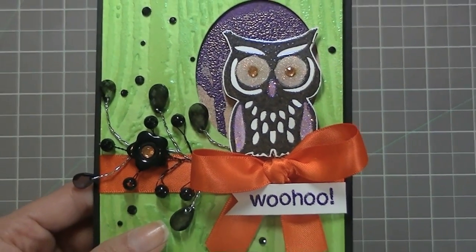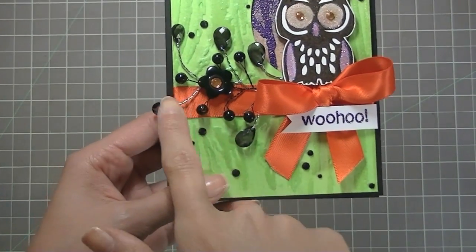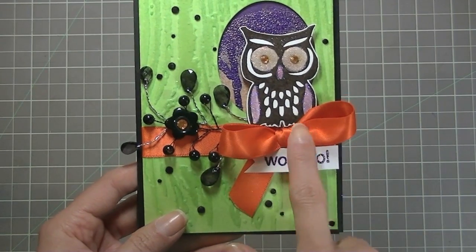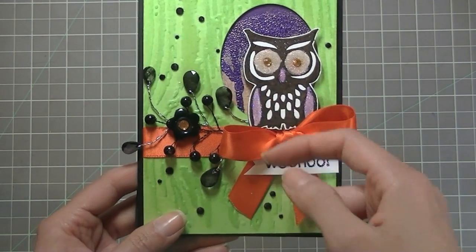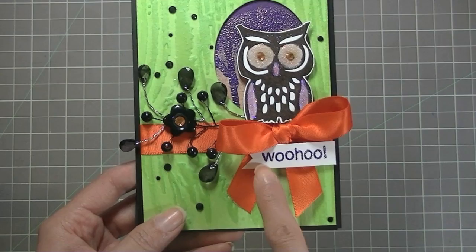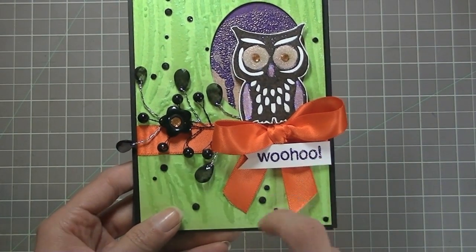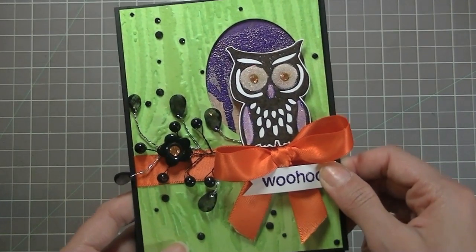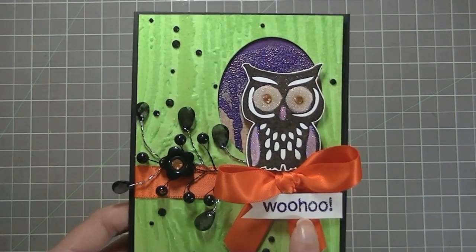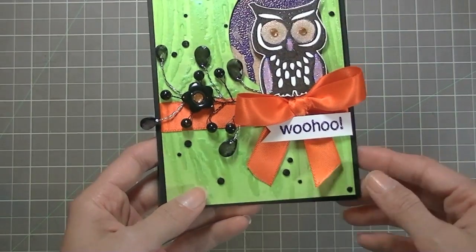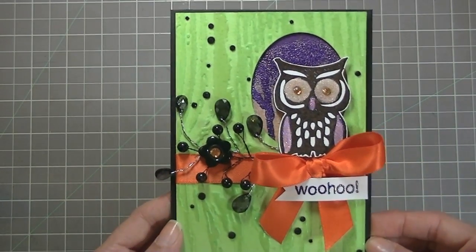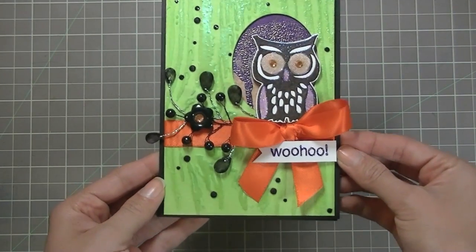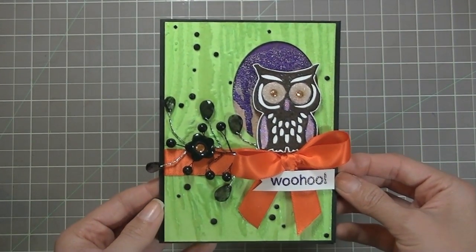Then after that I just added a little bit of some of the sprays that I have in my stash. Then I added some orange ribbon just to get more of that orange to pop out. Added some rhinestones, this woohoo sentiment that is from a Close to My Heart stamp set that Jill gave me. I added it on a banner which I cut freehand, and then I just added a few little black pearls just to add little accents to the card.